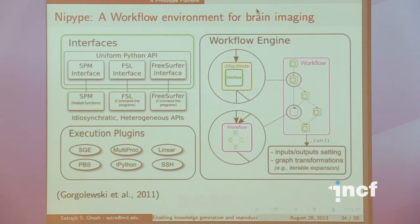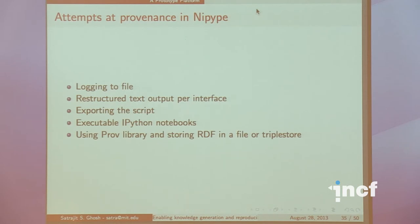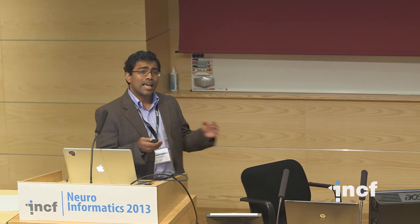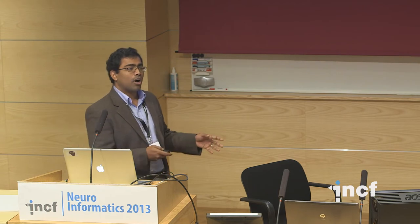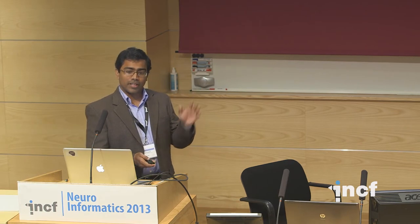I've been building a set of tools for brain imaging called the nipype workflow environment, which has embedded provenance tools. We first logged to a file — that broke down on a cluster because NFS shared writing broke down. We then wrote restructured text output per function — machines can't read it formally. Then we exported scripts in Python — but you need to know Python to read it. We went to IPython notebooks, which captured analysis flow but not all branches tried. Finally, using prov as an integrated library, we can track all branches of analysis, including those tried but not ultimately reported.